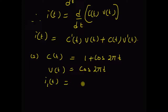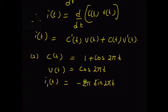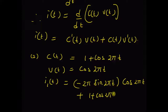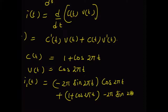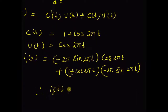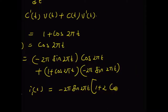Let us name it i1(t). By using the formula, the derivative of C(t) — that is C'(t) — equals minus 2π sin(2πt), multiplied by v(t) which is cos(2πt), plus C(t) which is 1 plus cos(2πt), multiplied by v'(t) which is the derivative of cos(2πt), again equal to minus 2π sin(2πt). Therefore, i1(t) equals minus 2π sin(2πt) times cos(2πt), plus 1 plus 2 times cos(2πt), multiplied by minus 2π sin(2πt).